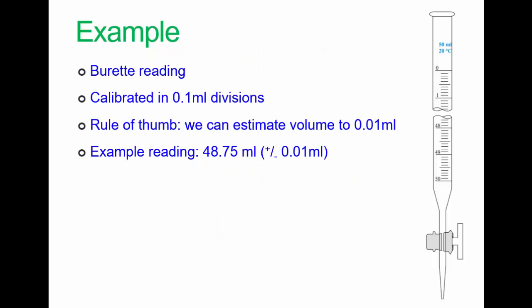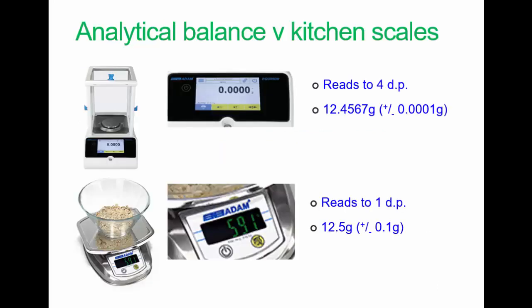Here's another example. Many of you have done titration. A typical 50 ml burette is calibrated in 0.1 ml divisions. Now, as a rule of thumb, people can estimate the volume between those readings to around maybe, if they're very good, 0.01, or if they're not quite so confident, maybe 0.05. So in this case, we would give a reading when we quoted it as 48.75 plus or minus 0.01, or possibly 0.05, depending on how confident you are in your own ability to read the burette. This does make a difference.